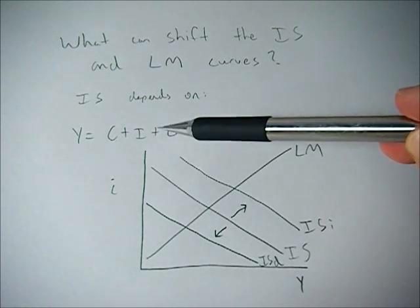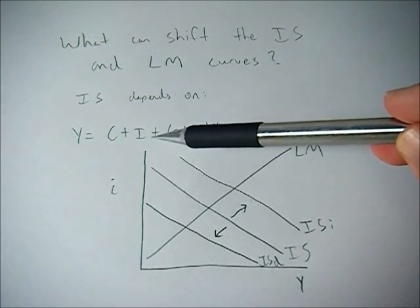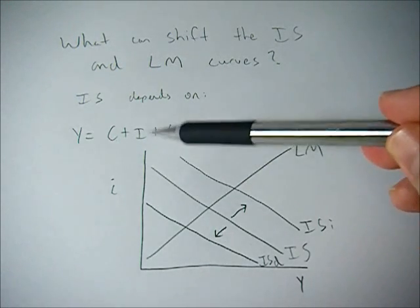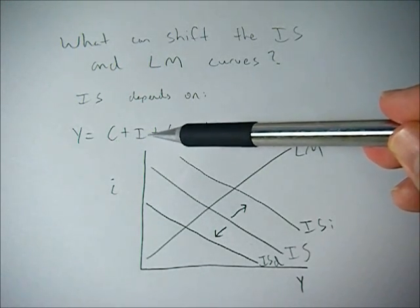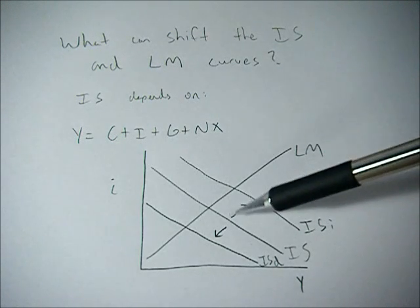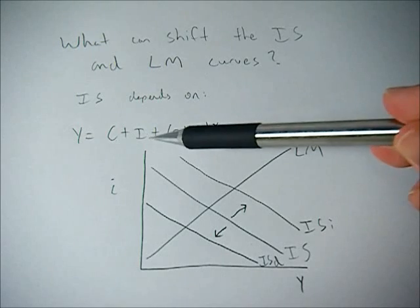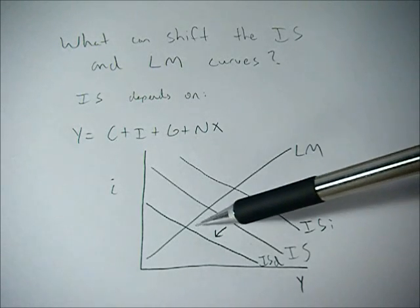Investment can change if the base investment level of firms, not dependent on the interest rate, but the base investment level changes and increases, then we're going to see this rightward shift in the IS curve. If it decreases, we'll see a leftward shift.